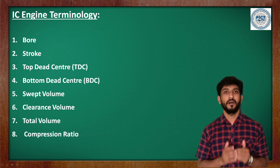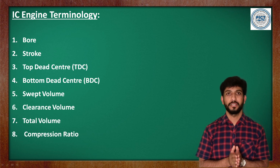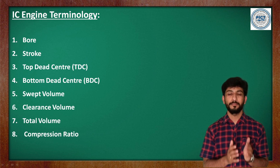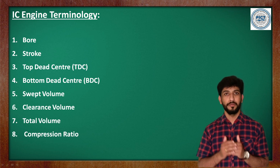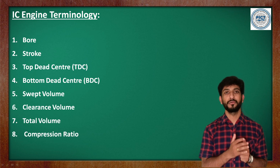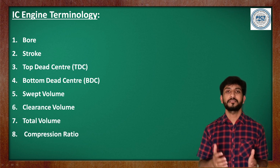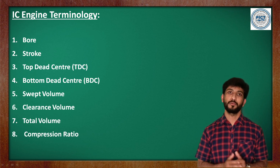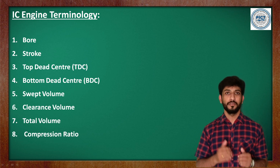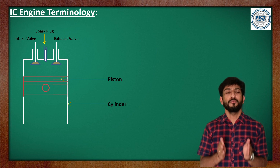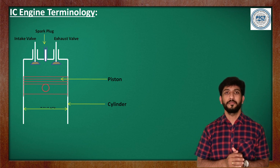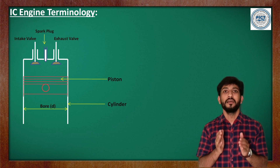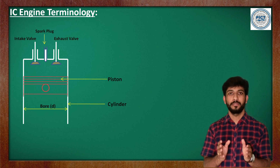To understand the operation of the reciprocating type of internal combustion engine, or to calculate important parameters related to it, we should be aware of these basic terms. The first term is bore. Bore is nothing but the nominal internal diameter of the engine cylinder.